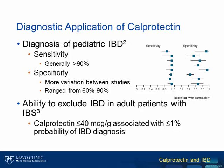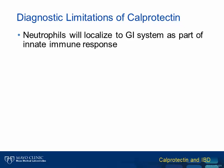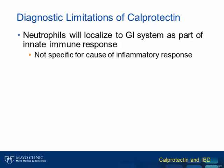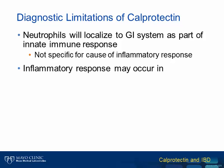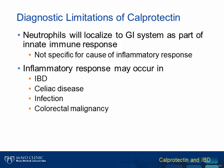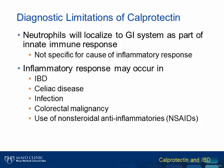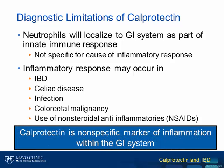Why is this the case? Remember that neutrophils localize to the GI system as part of any immune response. This localization is not specific for the cause of that inflammatory response. We know that an inflammatory response occurs in IBD. However, inflammation within the GI system can also be found in celiac disease, infection, colorectal cancer, and even with the use of non-steroidal anti-inflammatories. In other words, calprotectin must be viewed as a nonspecific marker of inflammation within the gastrointestinal system and not as a diagnostic marker for an individual disease.